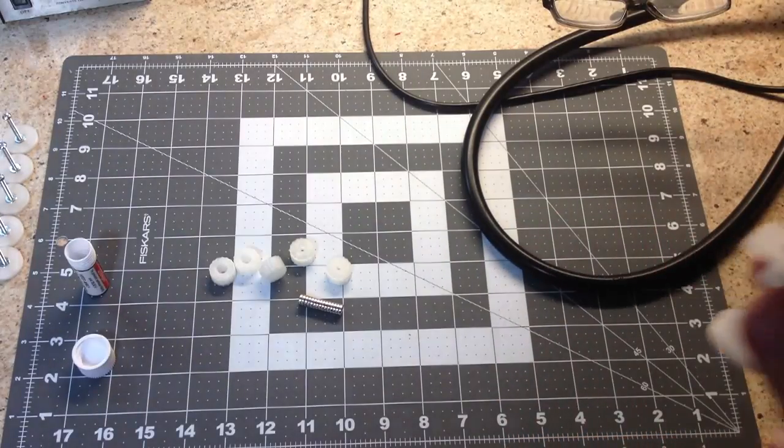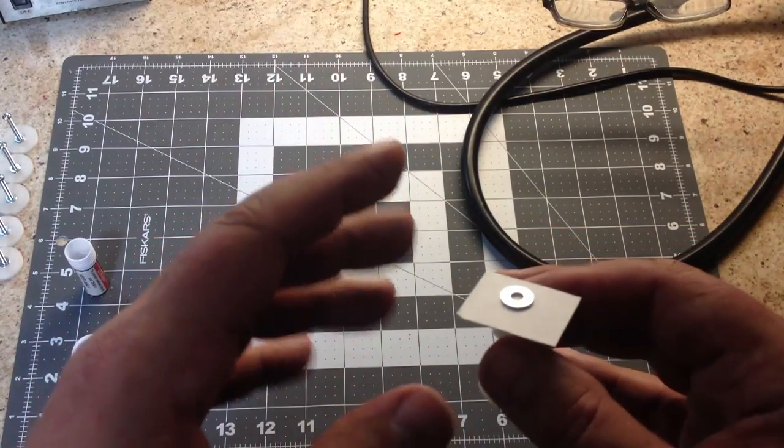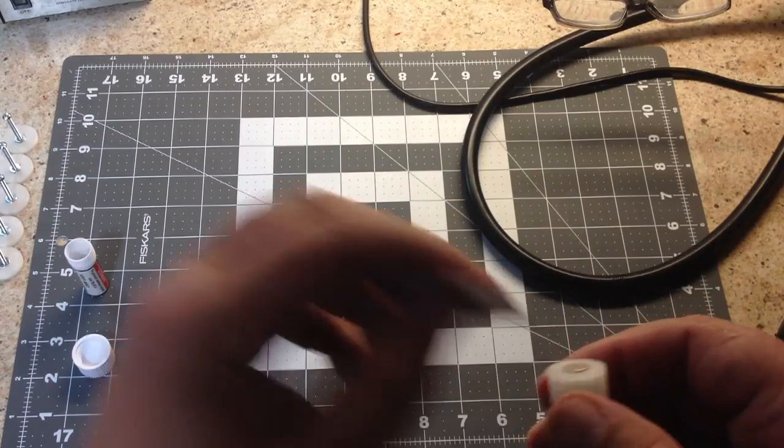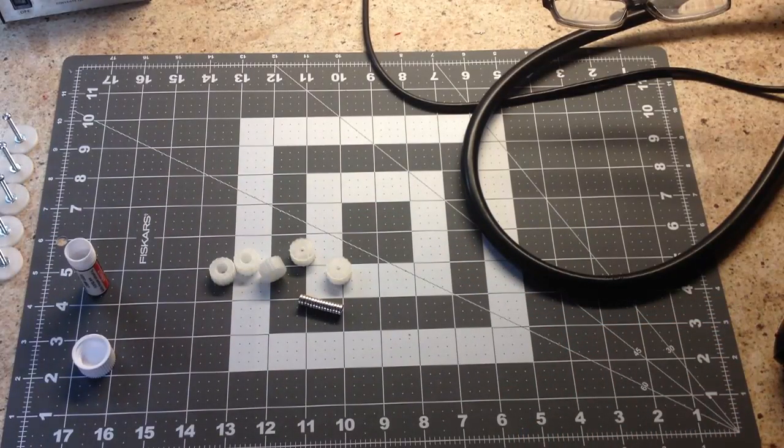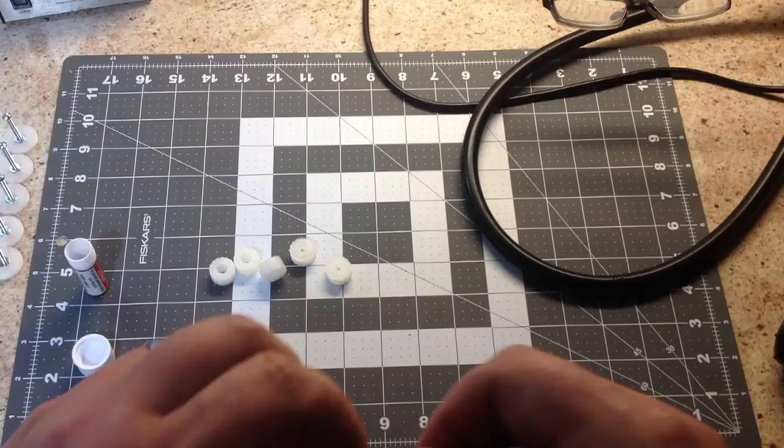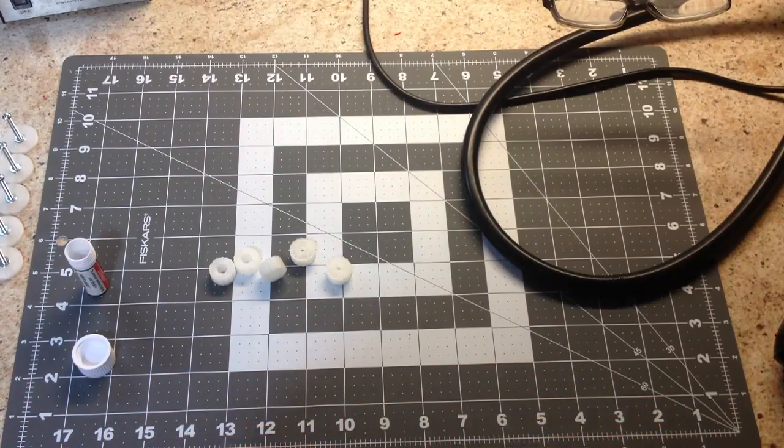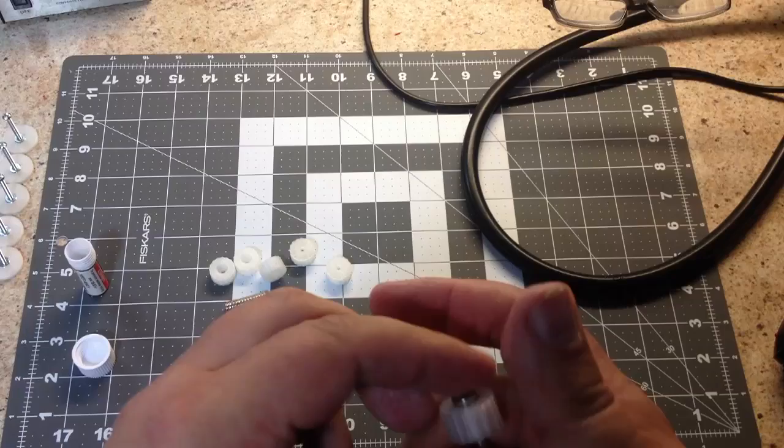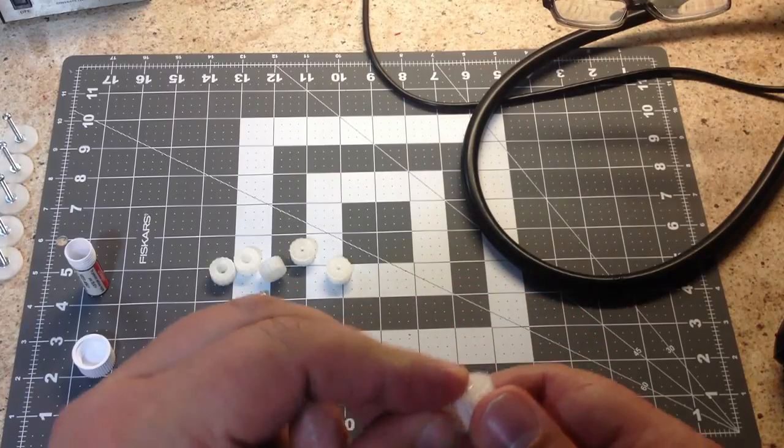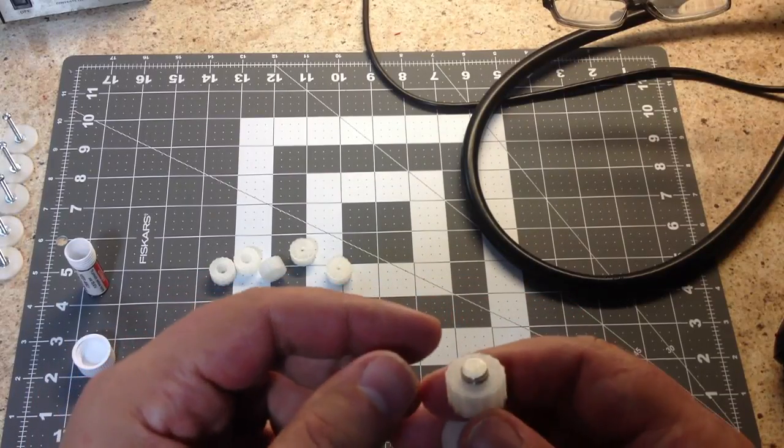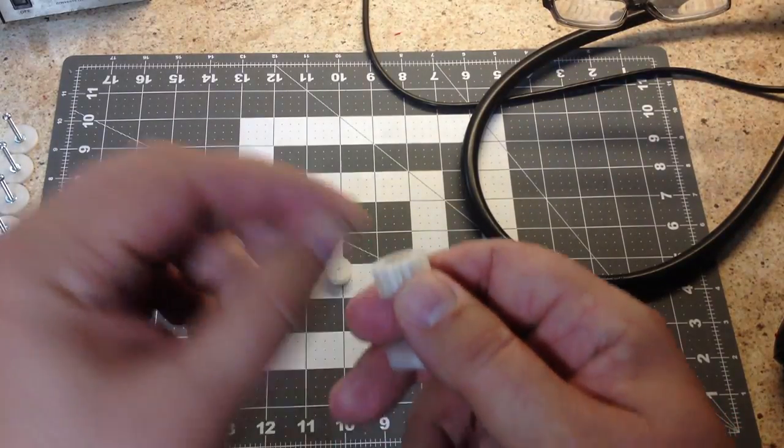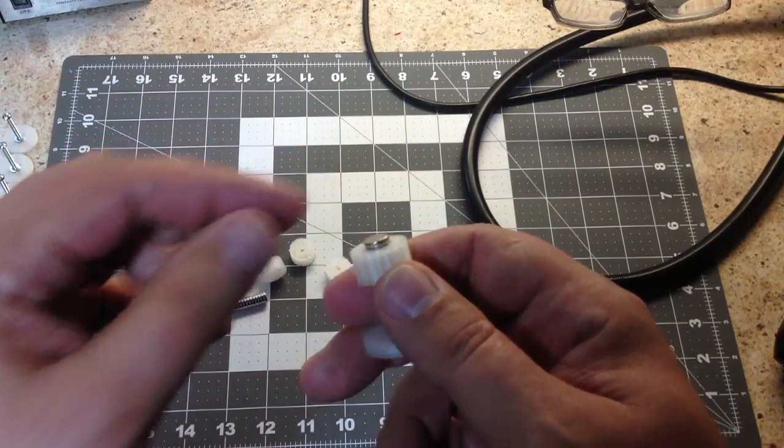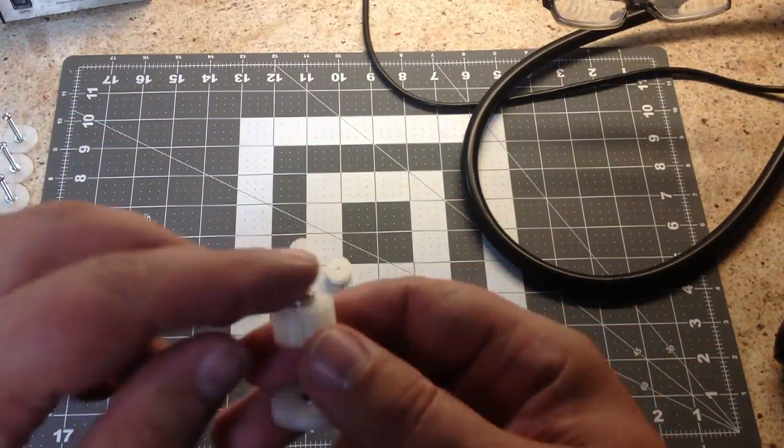This magnet will hold it in place so you can put your material on top there. For thinner piece of paper material, a washer will work fine, but if you're going to do something like a piece of three inch acrylic, you'll need another neodymium magnet to really hold it.